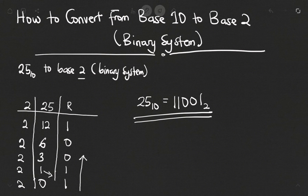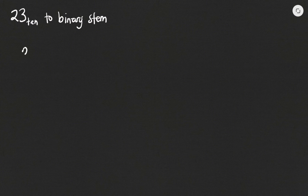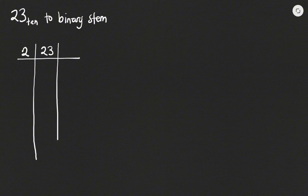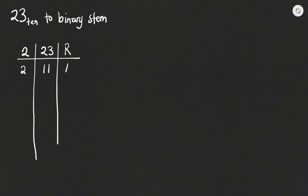Let's look at another example. We have to convert 23 base 10 to the binary system. We do the exact same thing as before: write base 2, write the number 23, then write down our remainder. How many times would 2 go into 23? It will go 11 times — 11 times 2 is 22 — so we are left with 1. How many times would 2 go into 11? It will go 5 times, which is 10, remainder 1.